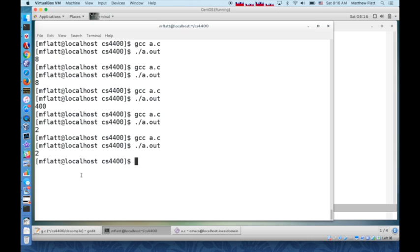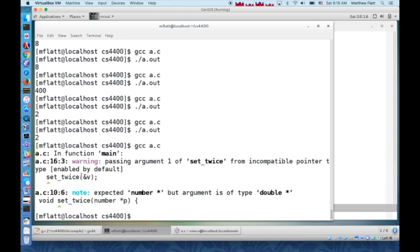On the other hand, if I use double here, then it will report a type error when I try to compile the program. It will say that I expected a number star, but it was given a double star. So the compiler knows that number star and int star are the same, and it knows that number star and double star are different.